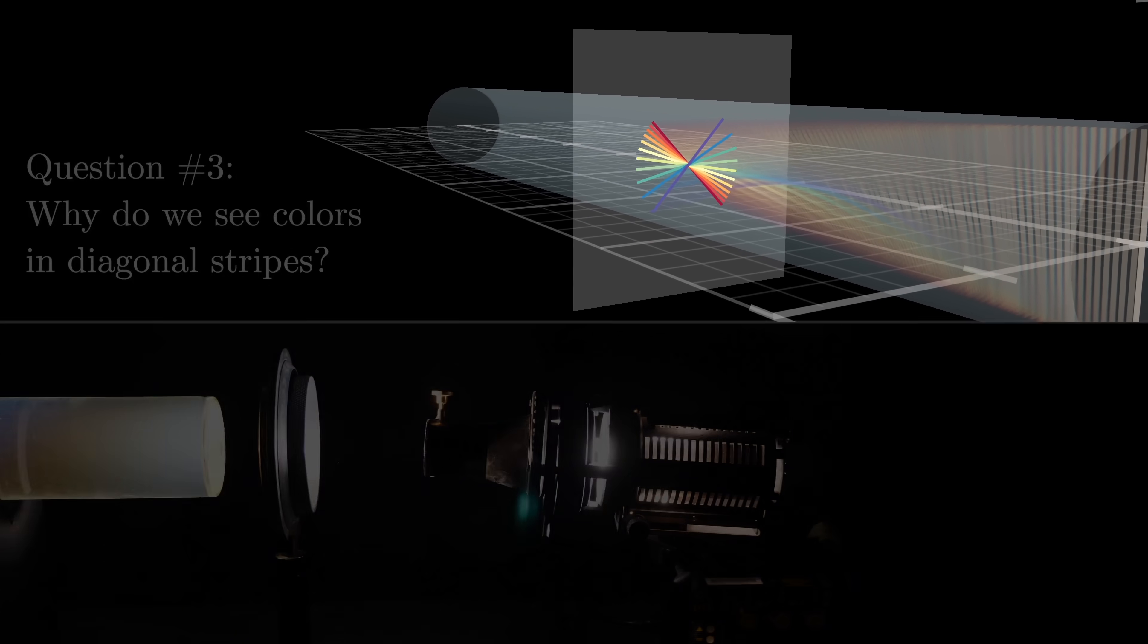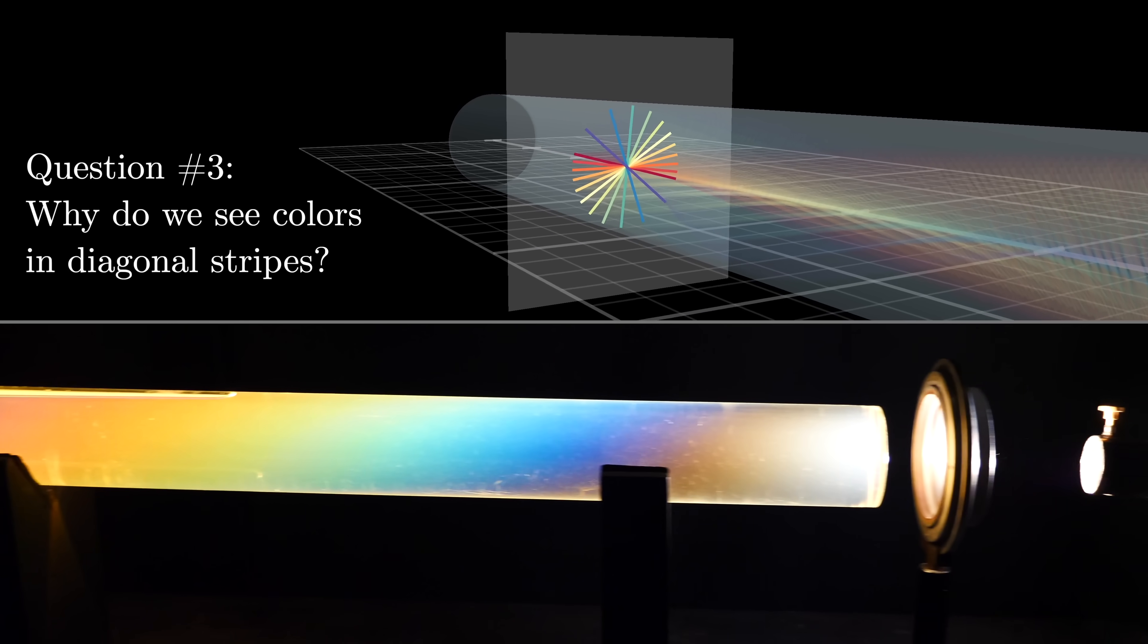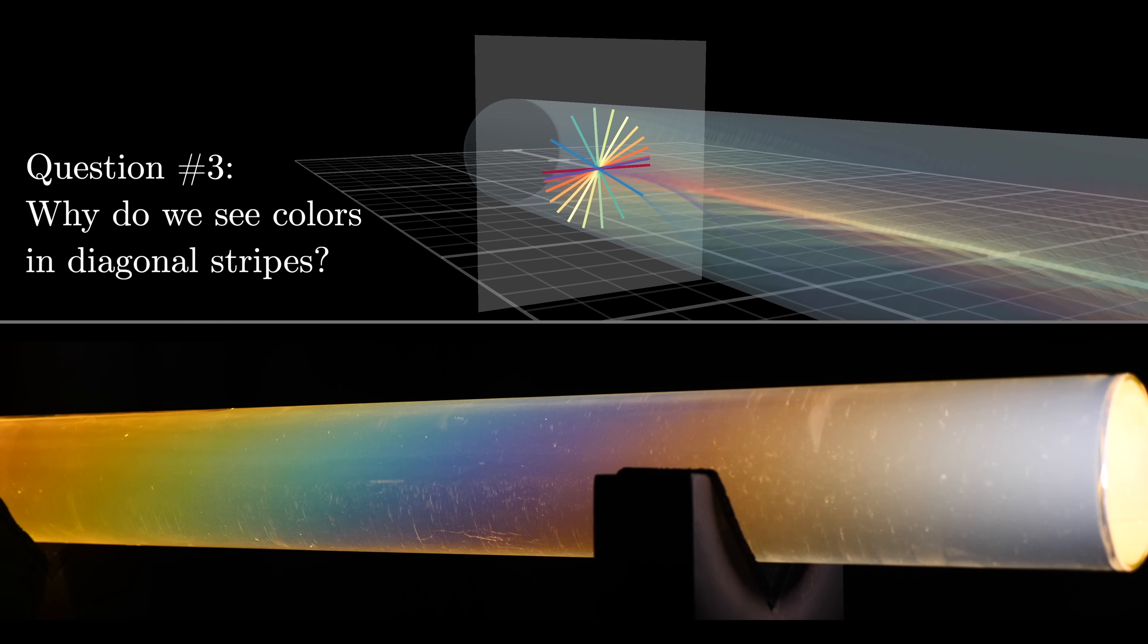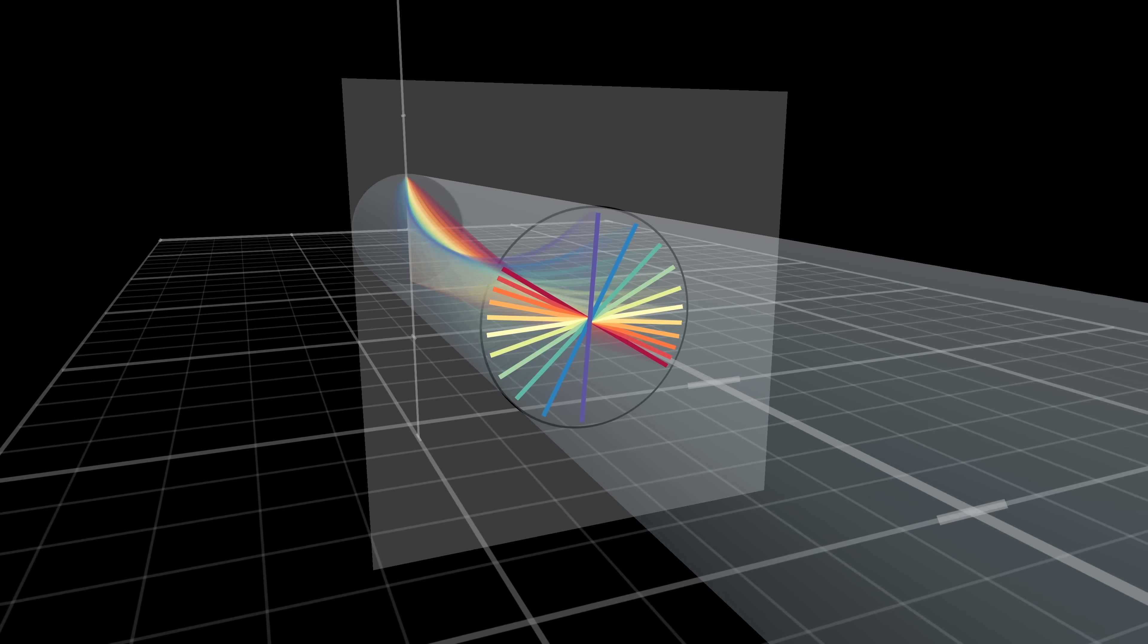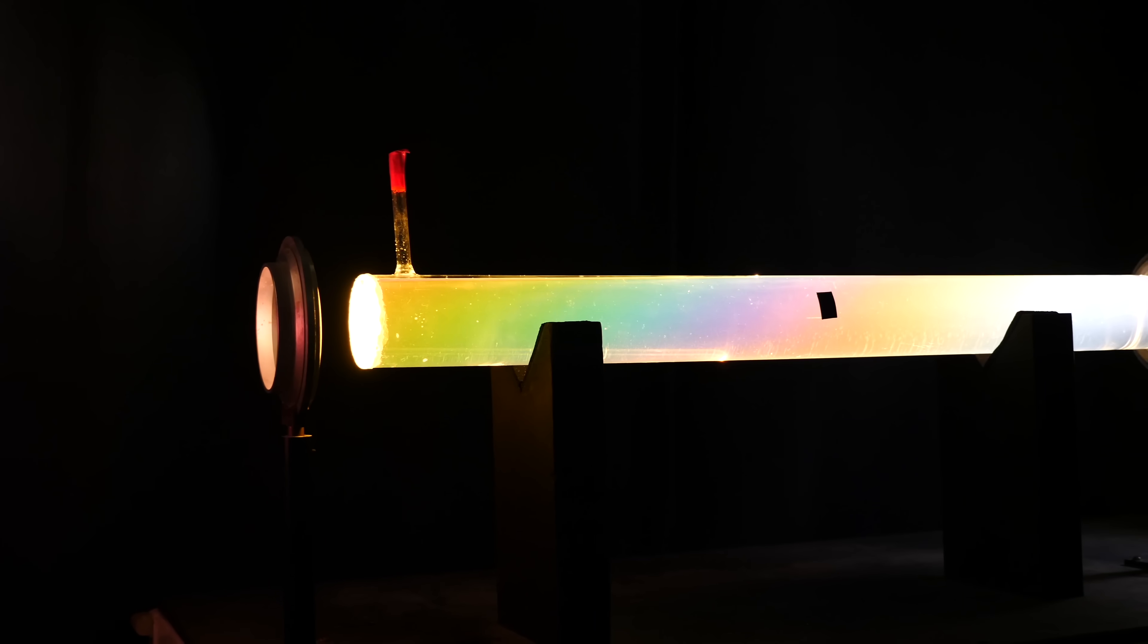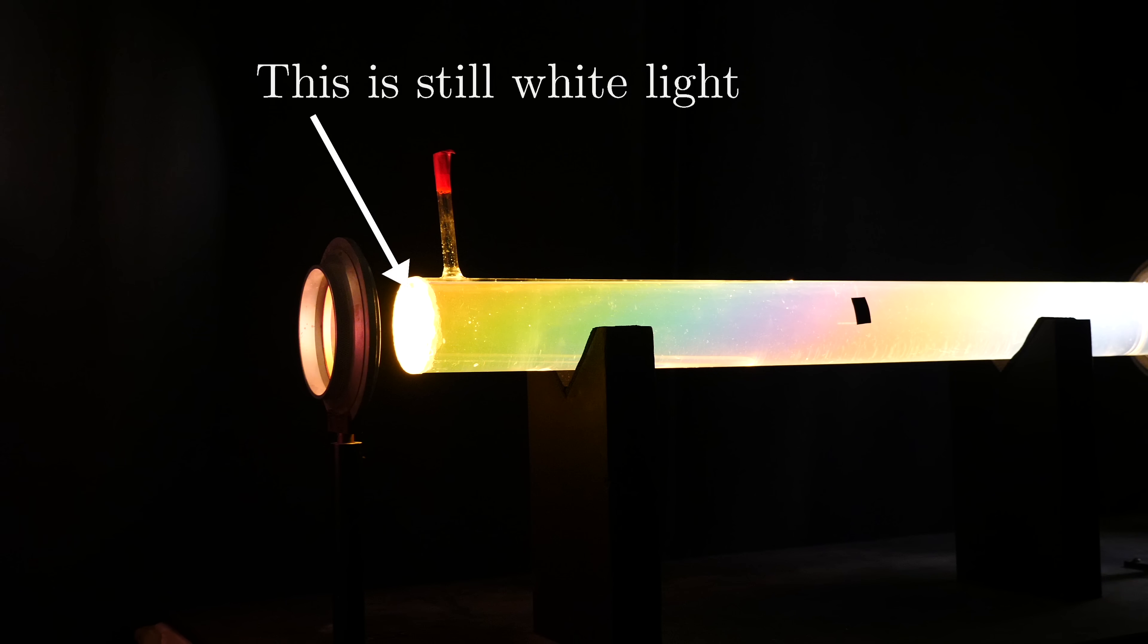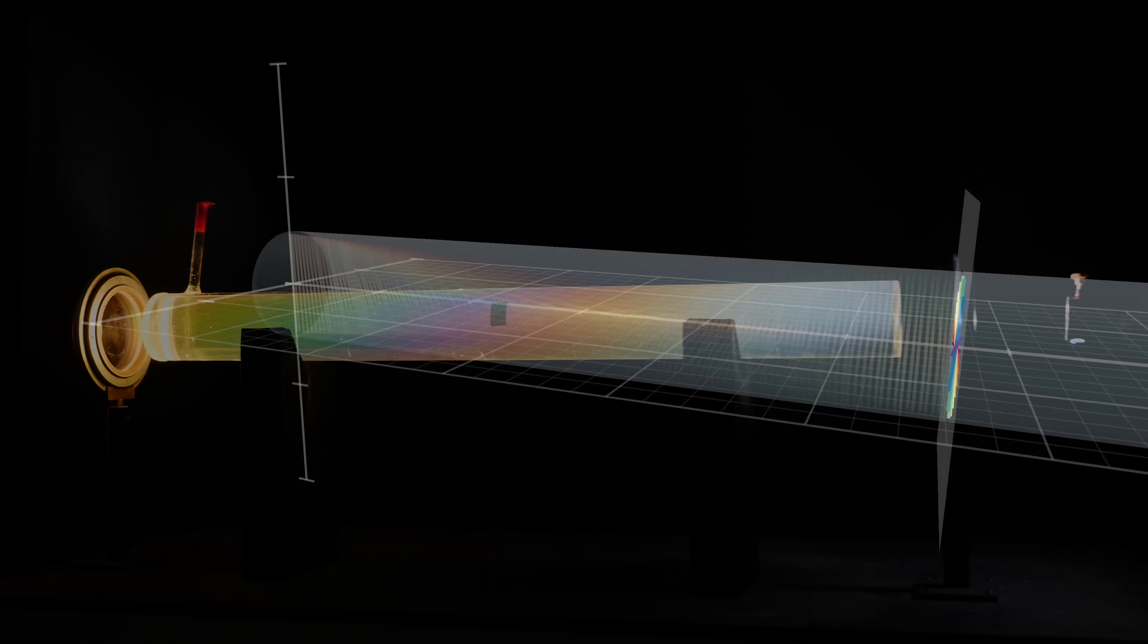But even if you understand this, the thing that really had me scratching my head when Quinn showed me this demo was why you would see diagonal stripes when you view the cylinder from the side. I mean take a moment to think about this. At any point down the tube, even though all the colors have been rotated differently, again the light at that point is still white, it's still an equal balance of all the different colors. If you were to stick your eye inside the tube and look towards the lamp, you would see white.